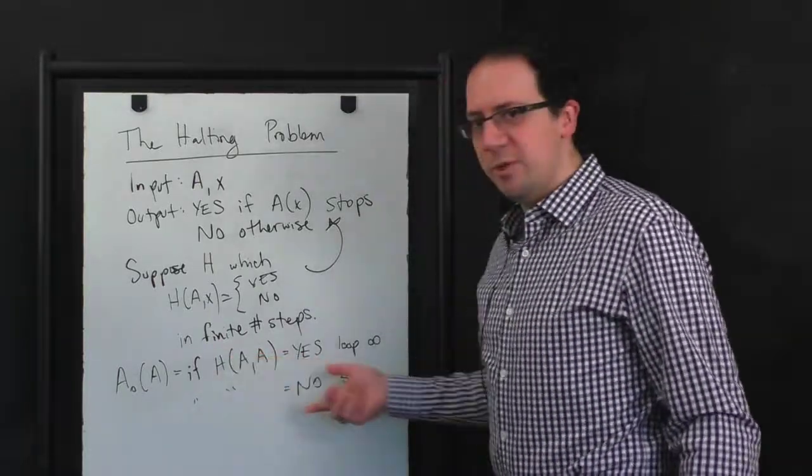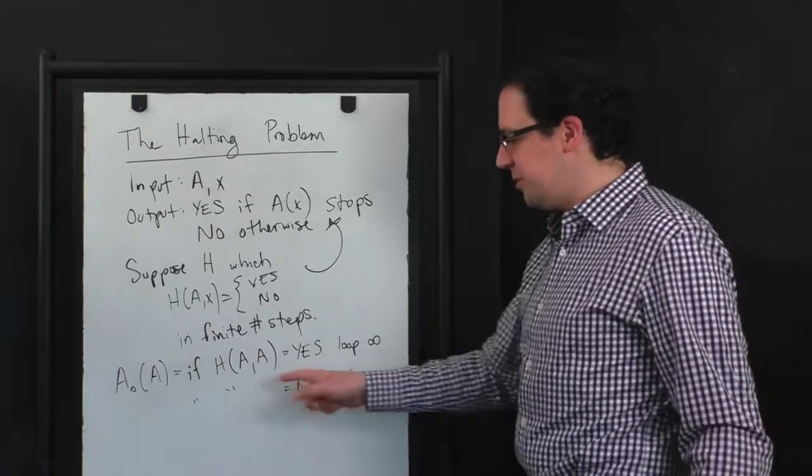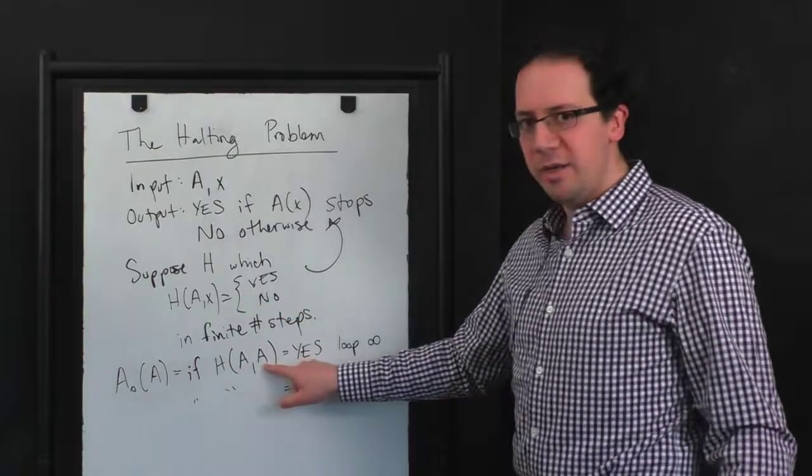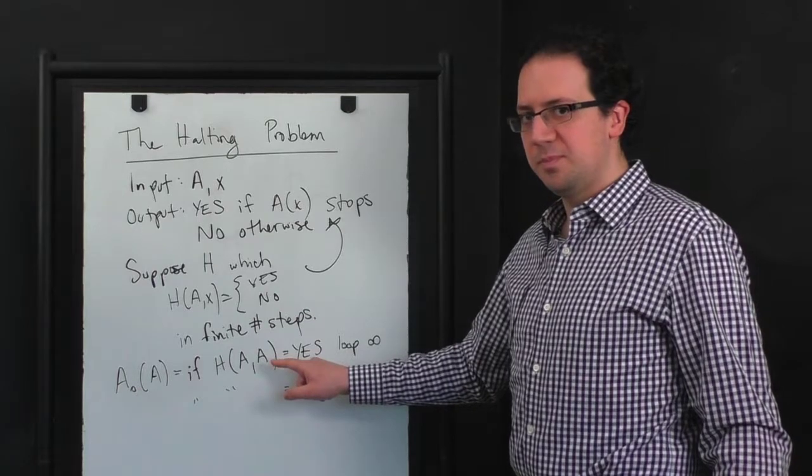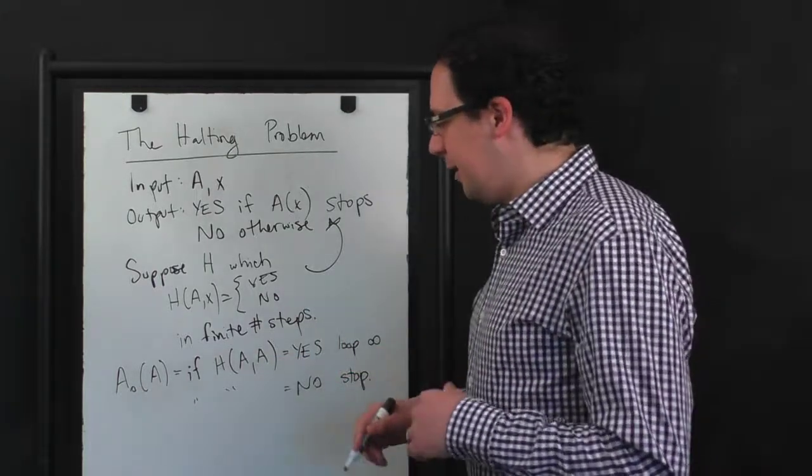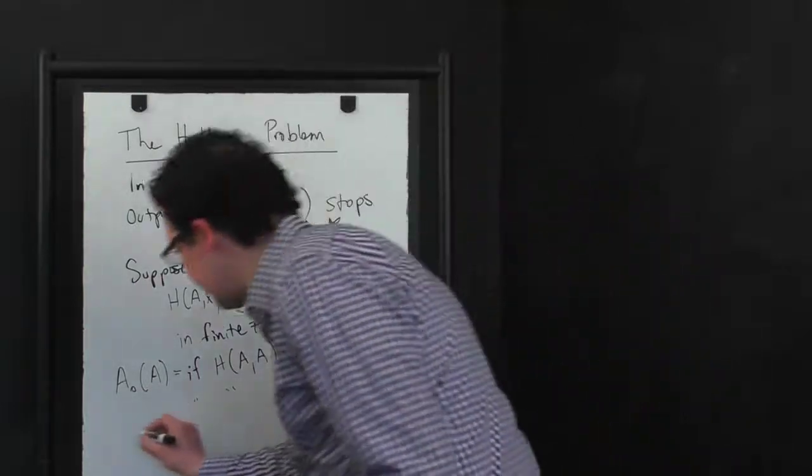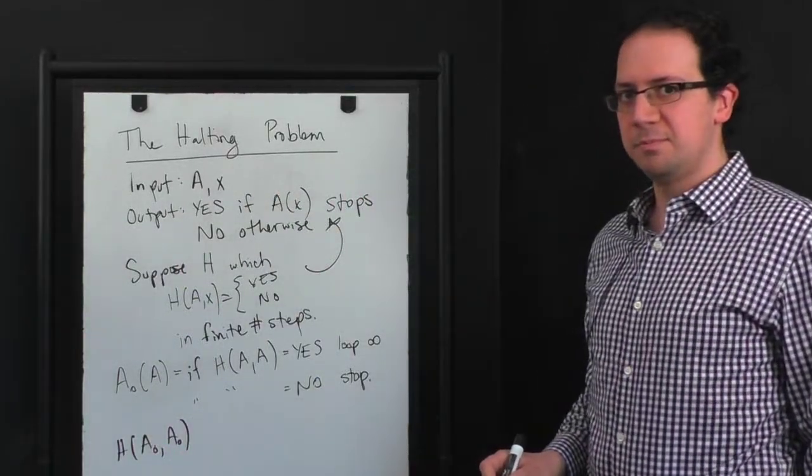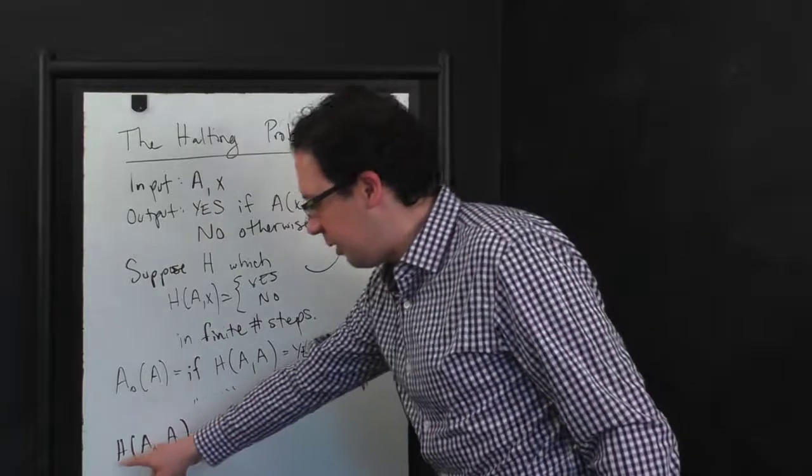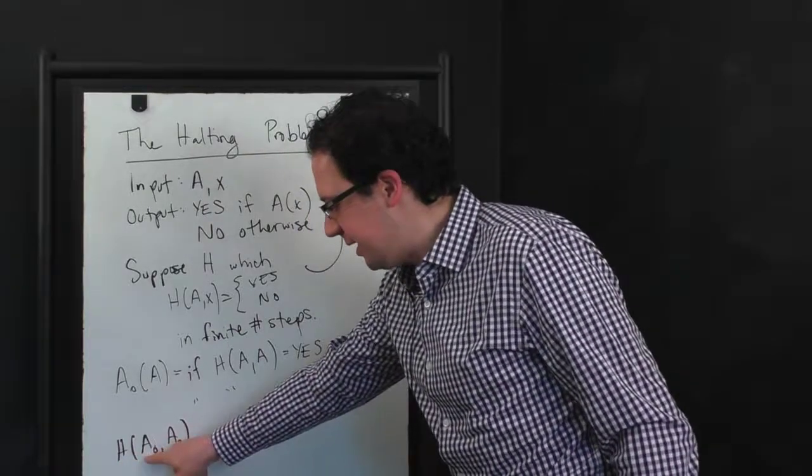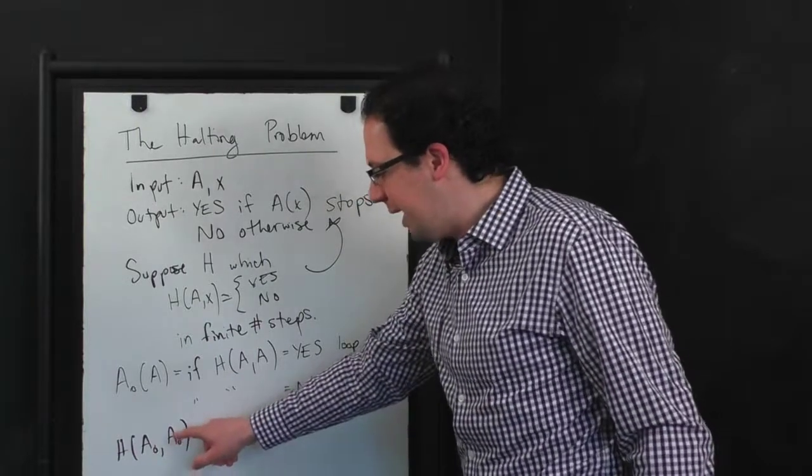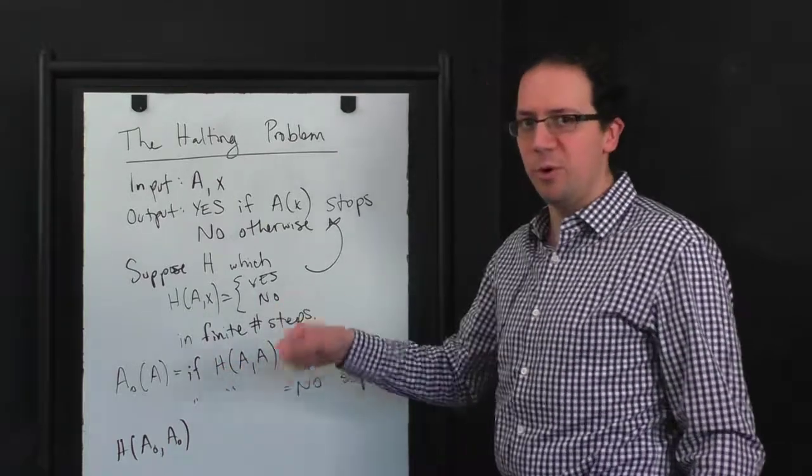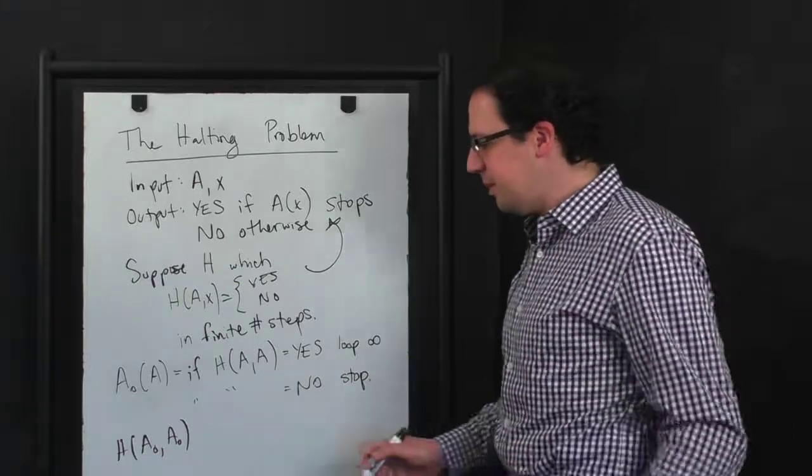Let's just review carefully what's happening here before we quite get to the part where it bites its own tail. So H of AA here should say yes if A running on input A stops. Right? So, all right, and now why is it that we want to show that H of A0, A0 is wrong? So here again, we're running a program where we're treating A0 both as its code and as its input. A0 itself, the program uses H as a subroutine, but that's not a problem because this is just some other program. So you're feeding programs into programs into programs, but that's fine.